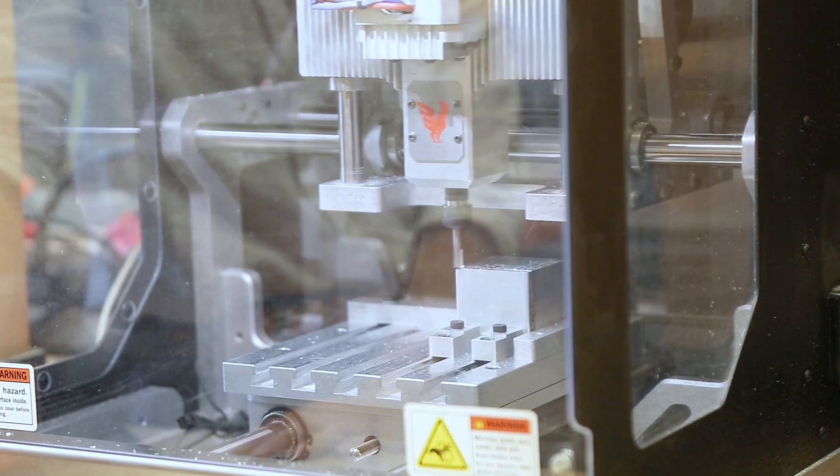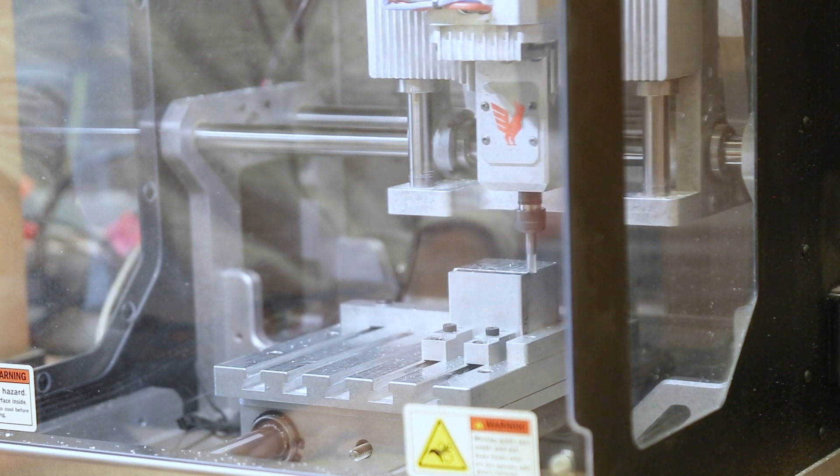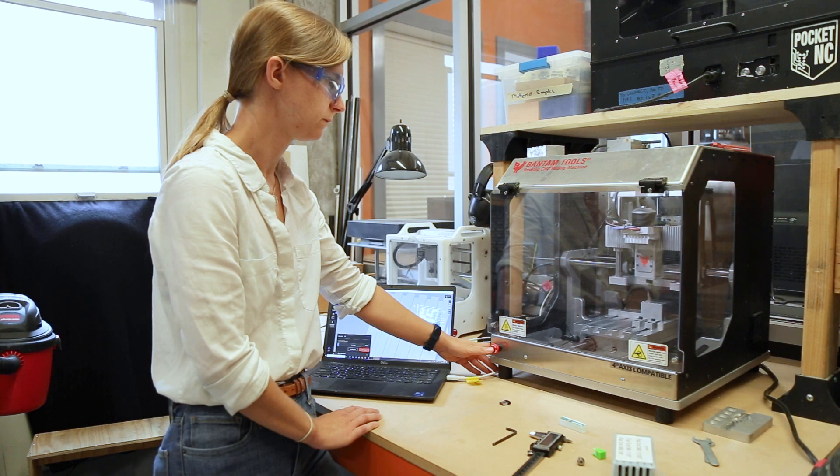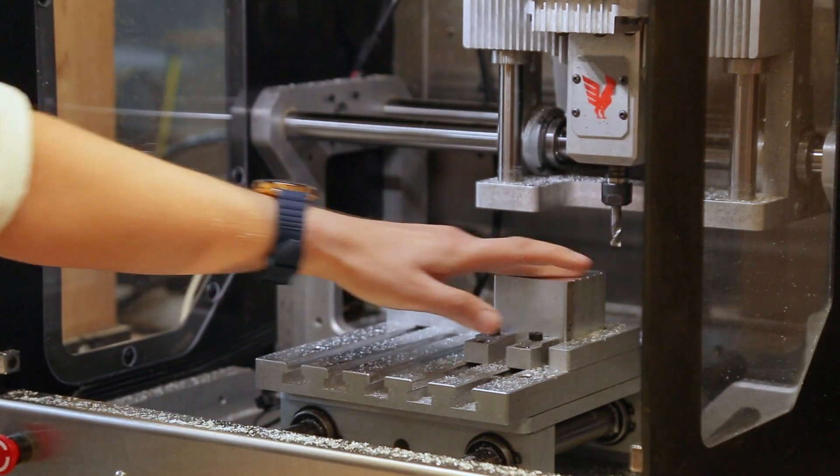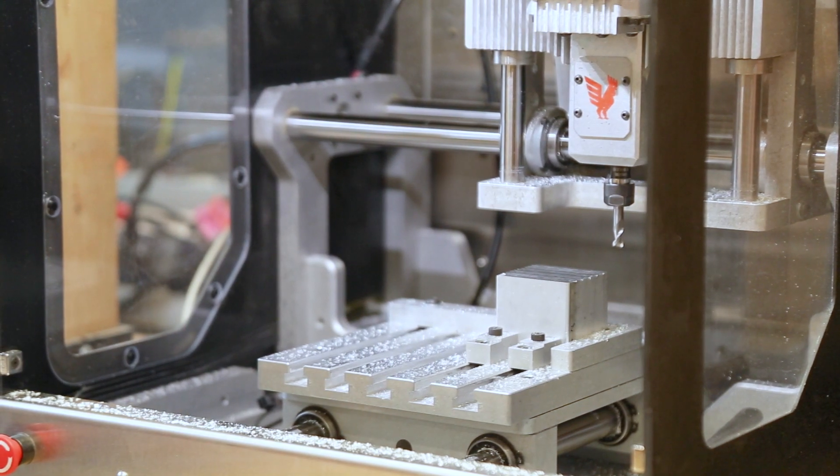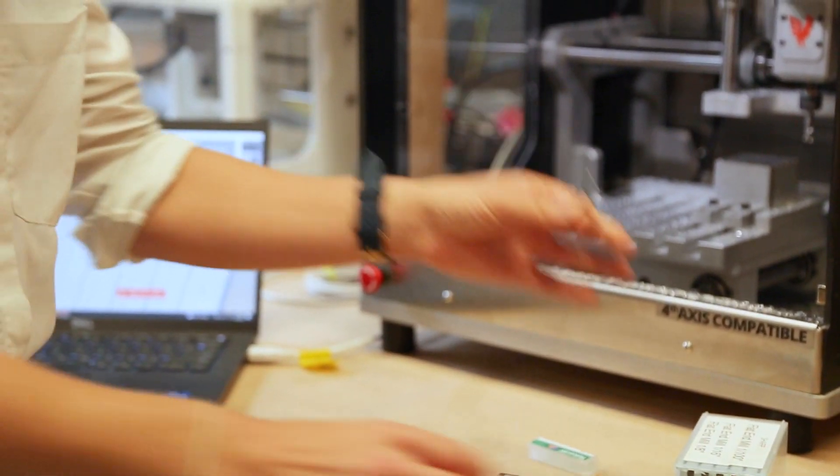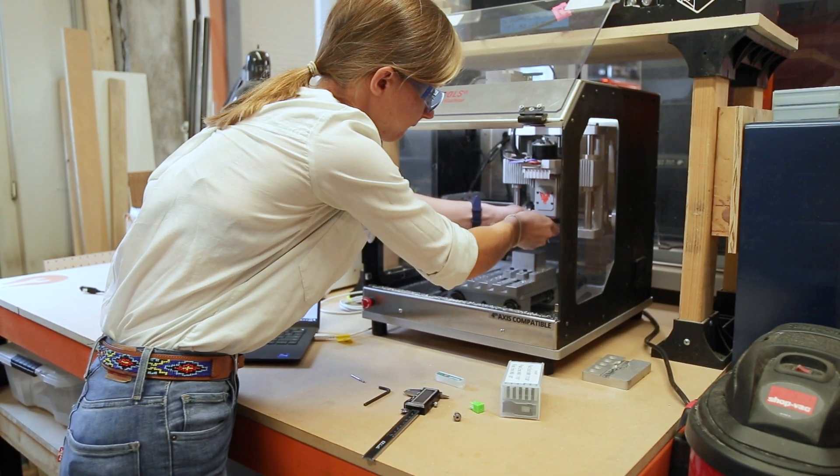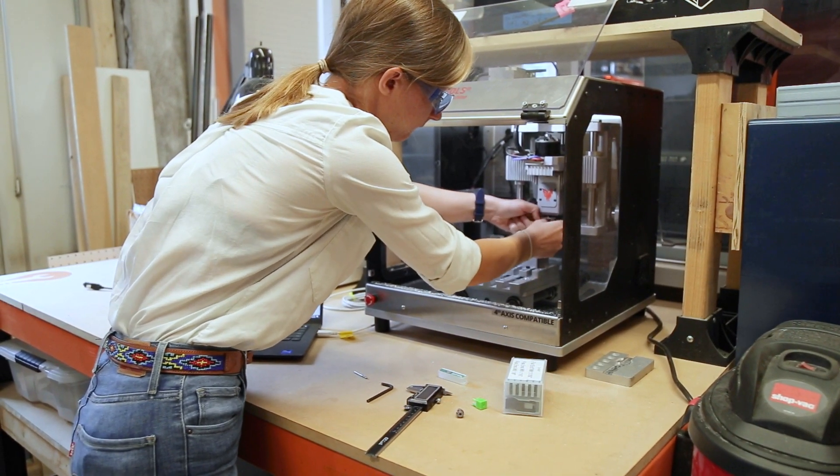That was our first tool path and what we see now is that we have a nice shiny flat top to our block, so we're ready to do our little maze pattern now. Our maze has to be done with a smaller tool, so I'm going to switch this over to an eighth of an inch drill bit. So this is an eighth of an inch flat end mill.